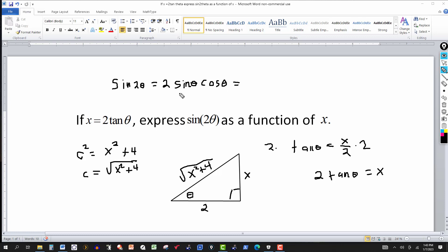Now all we have to do is represent this in terms of x from the triangle. So this will be 2. And let's look. Sine theta. Look at the triangle. Sine theta is the opposite over the hypotenuse. So this will be x over the square root x squared plus 4.